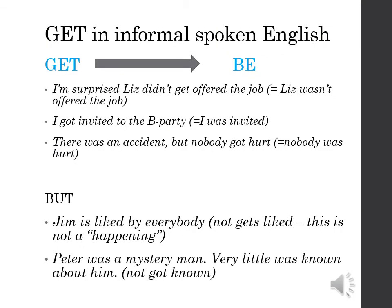We can use 'get' instead of 'be' in the passive. For example: 'I'm surprised Liz didn't get offered the job' (Liz wasn't offered the job). 'I got invited to the birthday party' (I was invited). 'There was an accident but nobody got hurt' (nobody was hurt). We use 'get' only when things happen — you cannot use 'get' in static situations like 'Jim is liked by everybody' or 'Very little was known about him.' Also, 'get' is used mainly in informal spoken English; you can use 'be' in all situations.